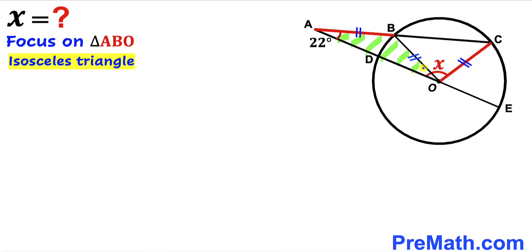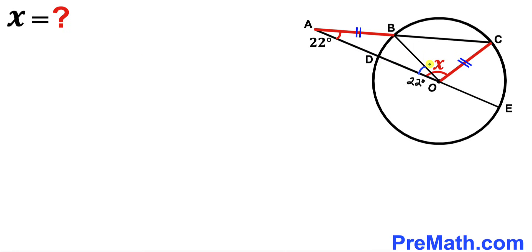Therefore we conclude that the base angles are congruent, so this angle is also 22 degrees. Thus angle DOB turns out to be 22 degrees. In the next step, I am going to connect points B and E.